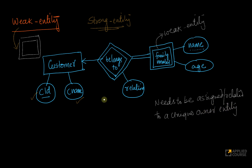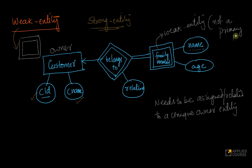A weak entity cannot exist in isolation. A weak entity needs to be assigned or related to a unique owner entity. In this case, if I am a customer with a family member account, I am called the owner entity. Every family member must have a unique owner entity, and the weak entity does not have a primary key — it does not have something like a customer ID.